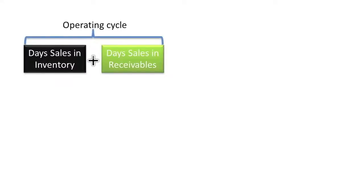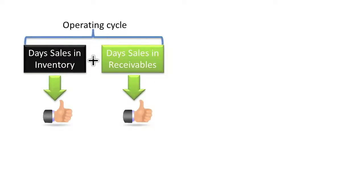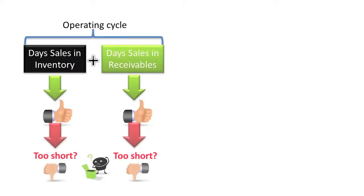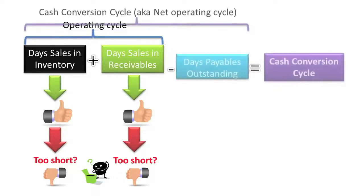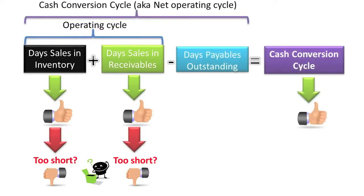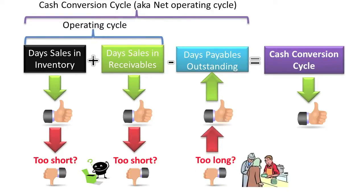In the operating cycle video, we discussed how in general companies benefit by minimizing their operating cycle through the reduction of their days sales in inventory and days sales in receivables. However, we also noted that an operating cycle that is too short can have unintended consequences such as lost sales and disgruntled customers. Similarly, companies should strive to reduce their cash conversion cycles, which might require increasing their days payables outstanding. However, companies need to avoid the unintended consequences of taking too long to pay off suppliers.